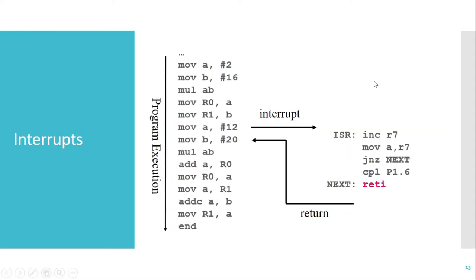Here is an example of how an interrupt works. When a program is executing sequentially and at a particular instant an interrupt occurs, the program counter jumps to the ISR of that particular interrupt. This ISR is a group of instructions used to perform a specific task. The last instruction in the interrupt service routine is RETI, which returns execution to the main program where it was interrupted, and the main program continues from that point.